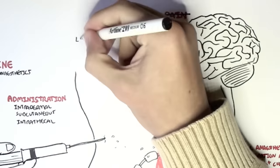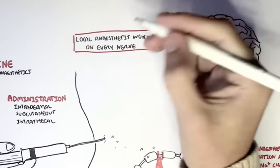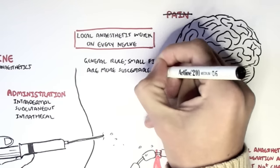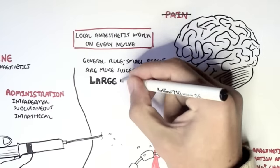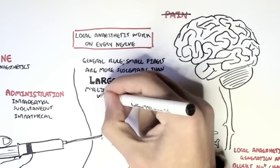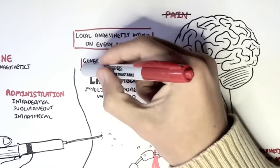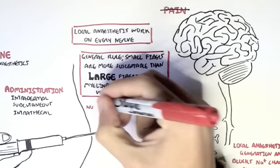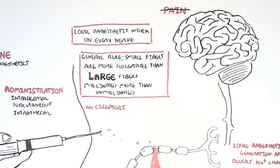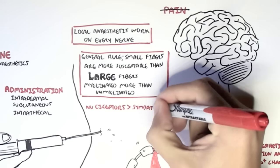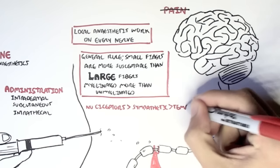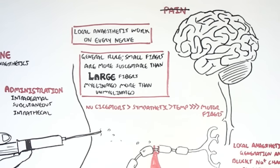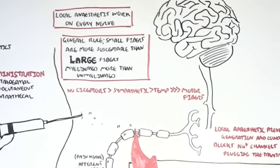However, local anesthetics actually work on every type of nerve, not only these afferent nerve fibers, the pain fibers. But as a general rule, they work more on small fibers, because small fibers are more susceptible than large fibers. And local anesthetics also work particularly on myelinated, more than unmyelinated nerve fibers. So if we draw this up from the most susceptible to the least susceptible, is that nociceptors, the pain fibers, are more susceptible to local anesthetics. And then we have the sympathetic fibers, the temperature fibers, and so on and so on, until finally on motor fibers. But we would need a massive dose of local anesthetic to paralyze a person.